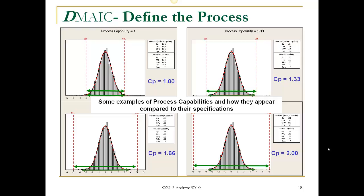Here are some examples of process capabilities compared to their specifications. In the upper left, a process capability of 1.0 shows the data spread nearly equal to the specification range. In the upper right, a process capability of 1.33 means the specification has been extended by one standard deviation on each side, so the process fits much better. In the lower left, a capability of 1.66 opens it to five standard deviations. In the lower right, a capability of 2.0 provides three standard deviations on both sides — that is six sigma quality.